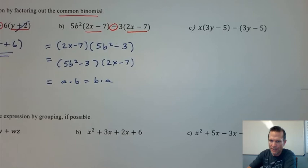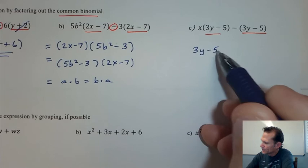So you could write that either way there. Okay, so now looking at this last one, see here it's not that hard to spot the common binomial. So we have the common binomial of 3y minus 5, so I'm going to pull that out front.